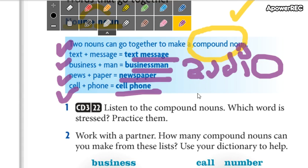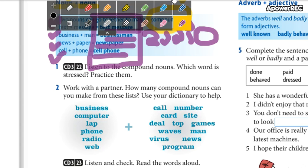So, send me an audio to the WhatsApp group telling me which is stressed. And then you read these words, these compound nouns. Okay. Send your audio.